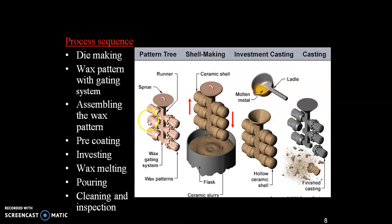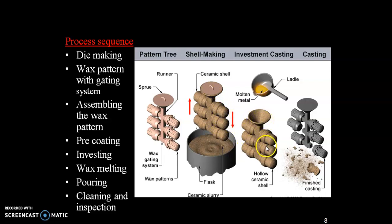First, the wax pattern is arranged into a tree pattern shape and then immersed in a flask containing ceramic slurry, so the wax pattern is coated with ceramic slurry. The wax pattern is then heated, causing the wax to melt out and the ceramic shell to harden. This produces a hollow ceramic shell. Molten metal from the ladle is poured into the ceramic shell and allowed to cool. Finally, the ceramic shell is broken out and the casting is produced.